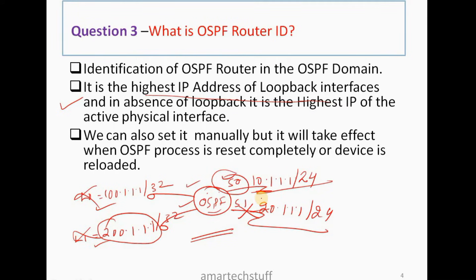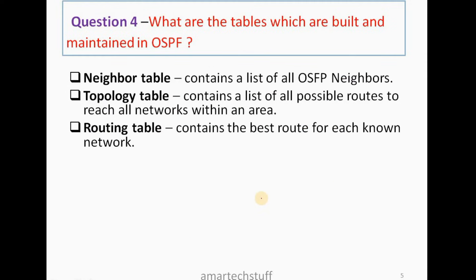The Router ID is the identification of a router in the OSPF domain. It is the highest IP address of a loopback interface, or in the absence of a loopback, the highest IP of an active physical interface. We can also manually hard-code an OSPF Router ID, but that requires a router reboot or an OSPF process reset.